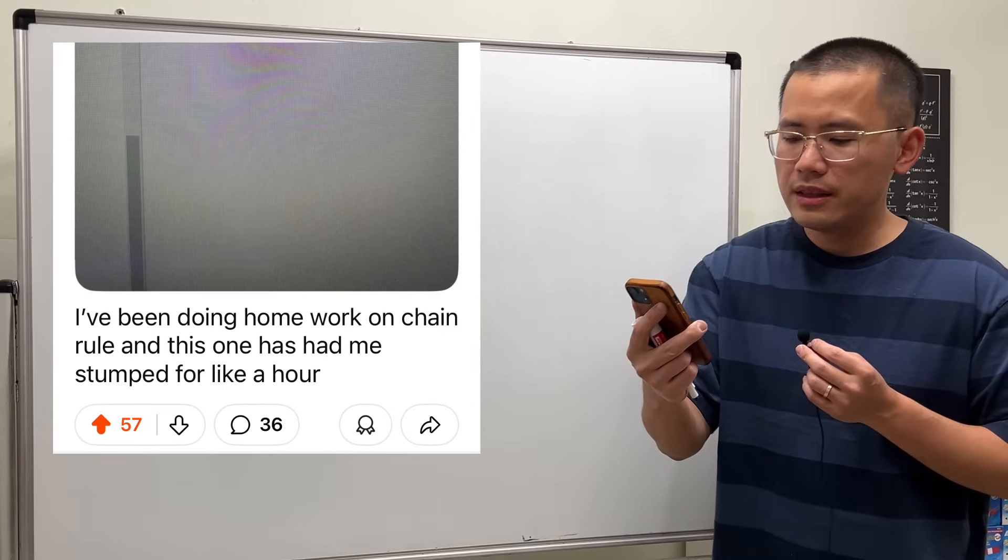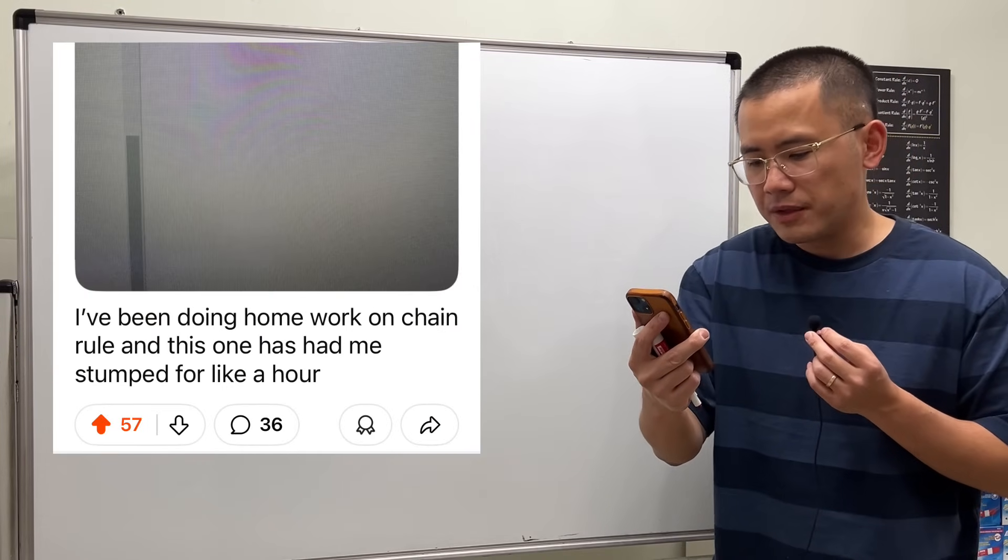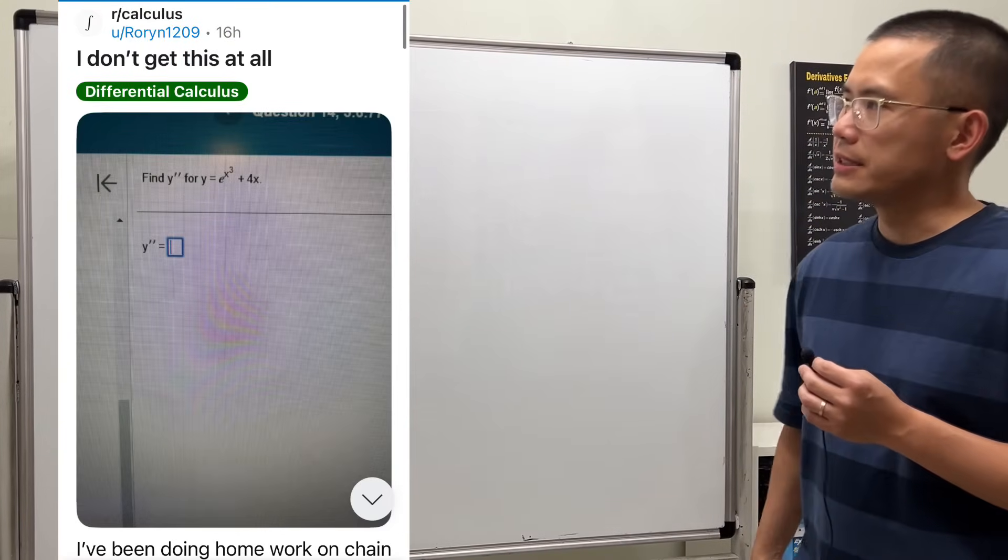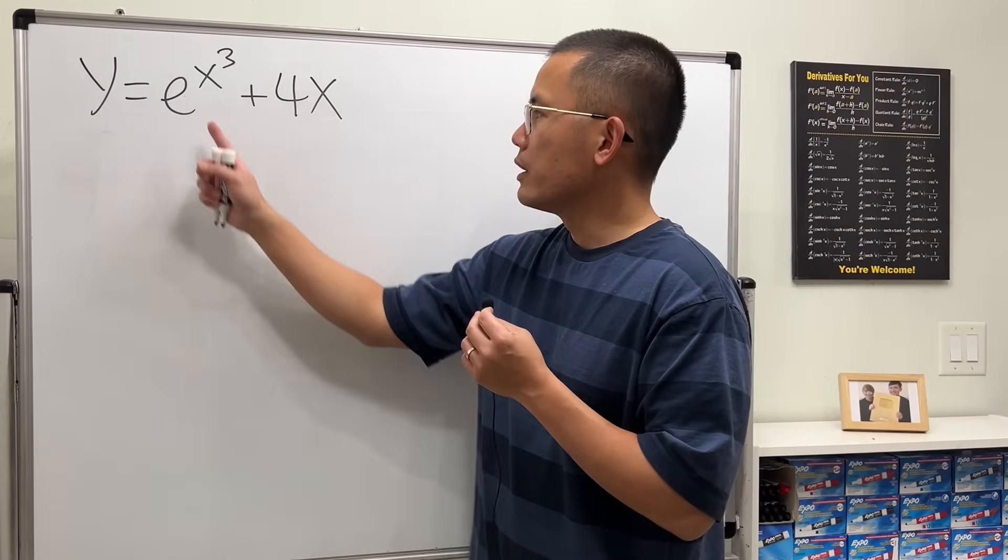I've been doing homework on chain rule and this one has had me stumped for like an hour. Okay, don't worry, let me help you understand. We are going to take the second derivative for this function we have e